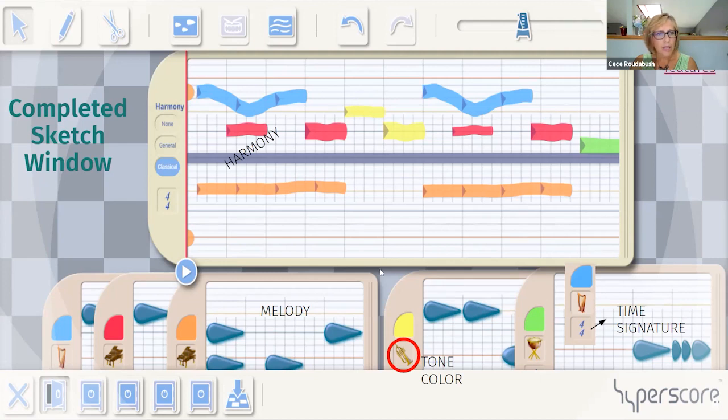In these harmony windows up here, I've actually now put together in this sketch window some harmonies. The kid-friendly definition we used in my class was two or more notes heard at the same time. So I've got my red window, my blue window, and my orange window playing at the same time. This qualifies as harmony.